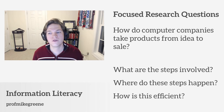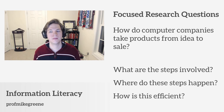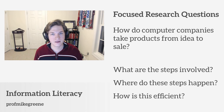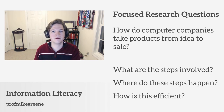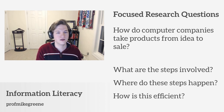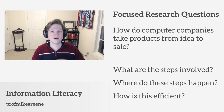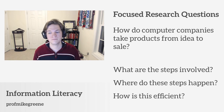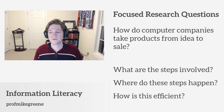Let's go back to one of our main research questions: 'How do computer companies take products from idea to sale?' Some examples of possible focused questions could be: 'What are the steps involved?' — there's a lot of things that happen between idea and sale. 'Where do these steps happen?' Right now Apple is on a big kick — designed in California. So if the idea comes from someone in California, do the parts come from there? Are they made there? Does the computer get put together there? Is it shipped from there? No, these things happen all over the country, all over the world, depending on the scale of your organization. 'How is this efficient?' — remember, technology is always about being efficient. So how is the process that computer companies use to take products from idea to sale efficient?